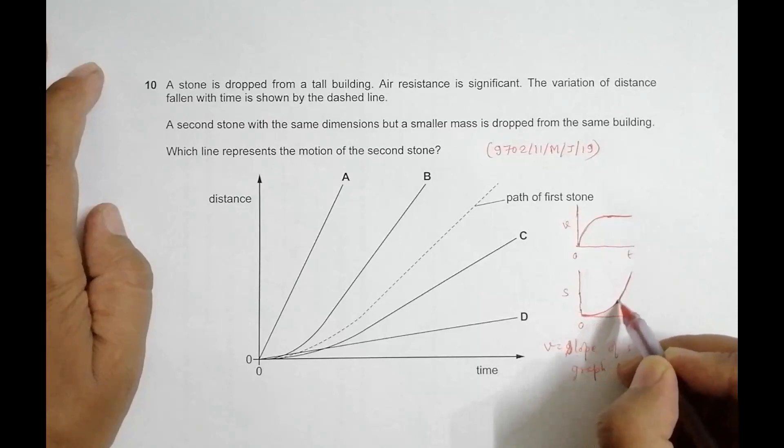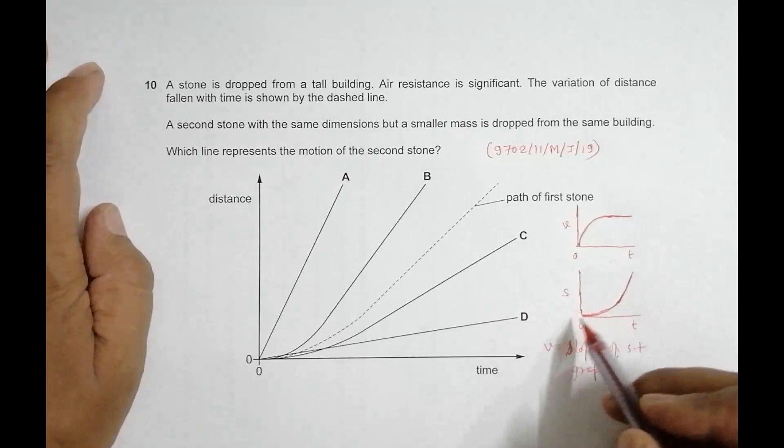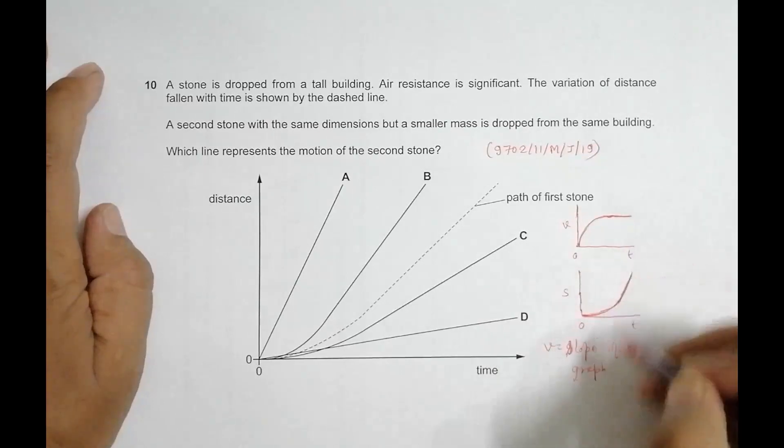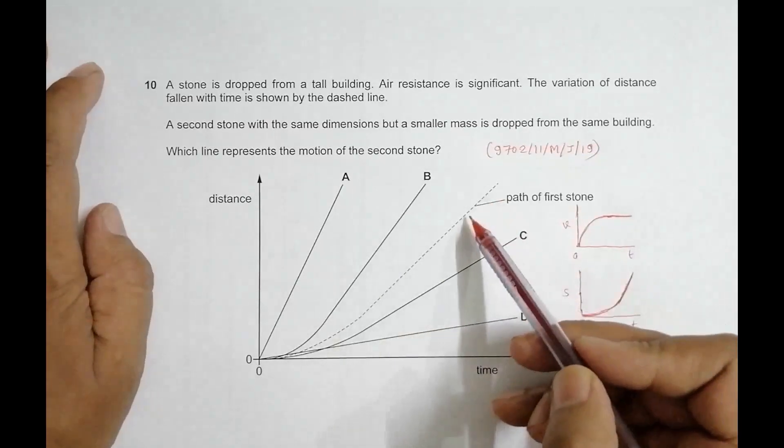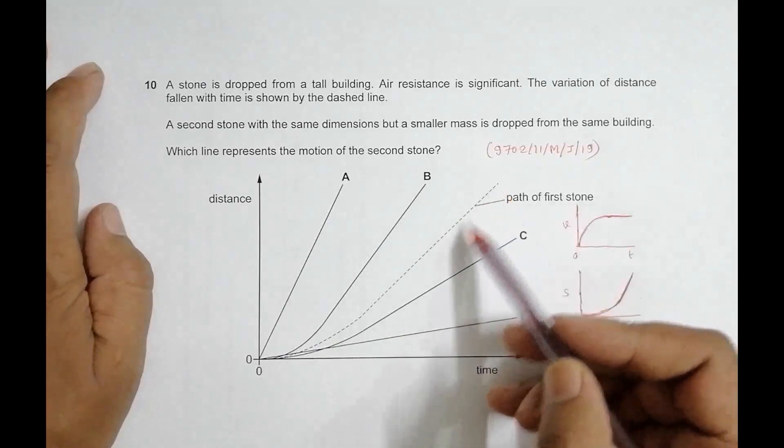So s should vary somewhat like this - the slope increases but later the slope becomes constant. If you look at this graph, it's perfect: straight line here, straight line here, and here is a curve.